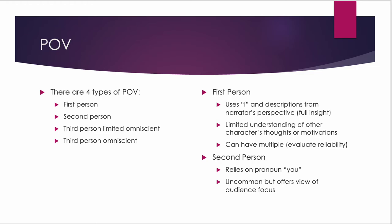First person narration can drive conflict and plot. You can have multiple first-person narration with switching narrators — this is more and more common in modern literature. But you do have to evaluate the reliability of those narrators. You can have something called an unreliable narrator, which is essentially a person where you have no idea if what they're saying really is the truth, but you're only seeing their perspective.